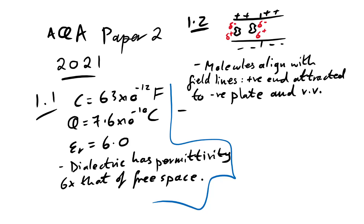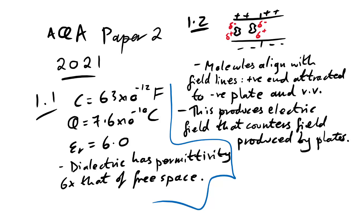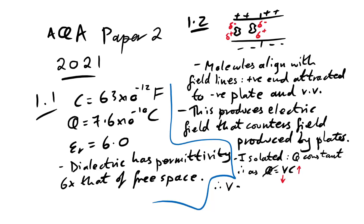The second point: this produces an electric field that counters the field produced by the plates. There are two things that can happen next depending on whether the capacitor is isolated or not. It is isolated, so Q stays constant because charge can't leak away. Therefore, as Q = VC and Q stays the same, V goes down, which means capacitance goes up. So V decreases and C increases. Of course, if it were still attached to a power supply battery, then V would stay the same and the charge would decrease instead.